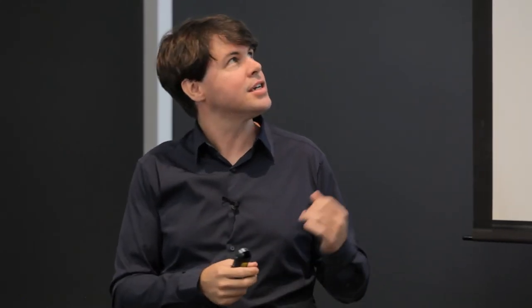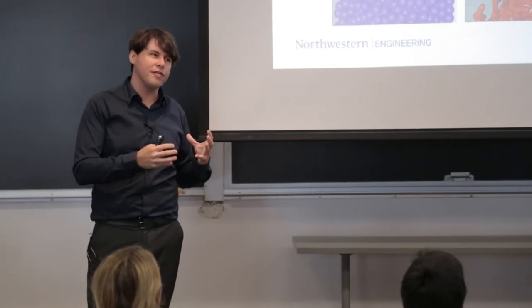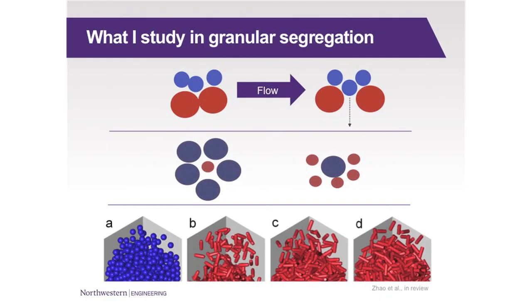And some of the specifics that I look at for when I'm doing my research, is I'm trying to understand how the flow affects segregation. So how are the particles moving amongst themselves and moving relative to each other? How does that affect segregation? I'm also looking at how do particles interact with their neighbors? So you can imagine that a small particle surrounded by large particles is going to act a little bit differently than a large particle that's surrounded by small particles.